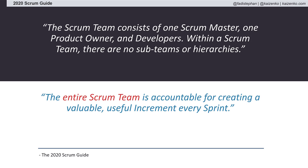Developers are accountable for delivering a working, usable increment each sprint. A product owner is accountable for maximizing the value of the product resulting from the work of the Scrum team. And the Scrum Master is accountable for the Scrum team's overall effectiveness.